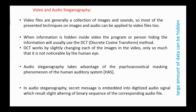Video files are generally a collection of images and sounds, so most techniques presented for images and audio can be applied to video files too. When information is hidden inside video, the program or person hiding the information will usually use the DCT — discrete cosine transform — method. DCT works by slightly changing each of the images in the video, only so much that it is not noticeable by the human eye. In audio steganography, a secret message is embedded into a digitized audio signal, which results in slight altering of the binary sequence of the corresponding audio file.